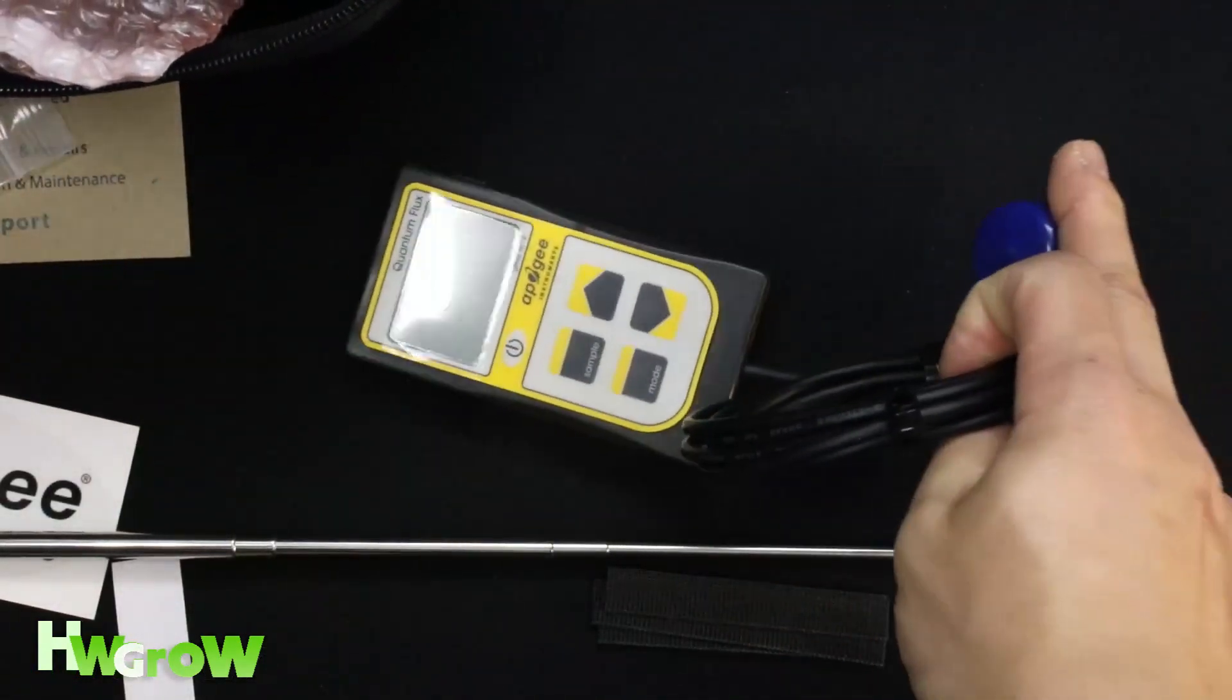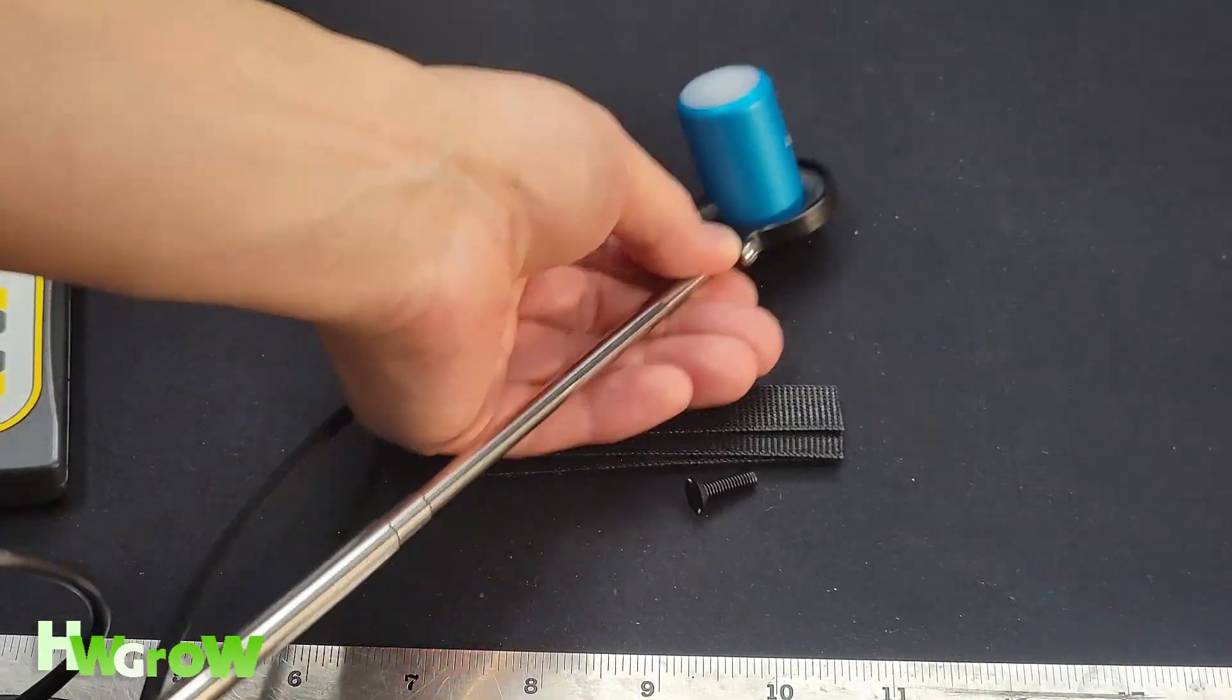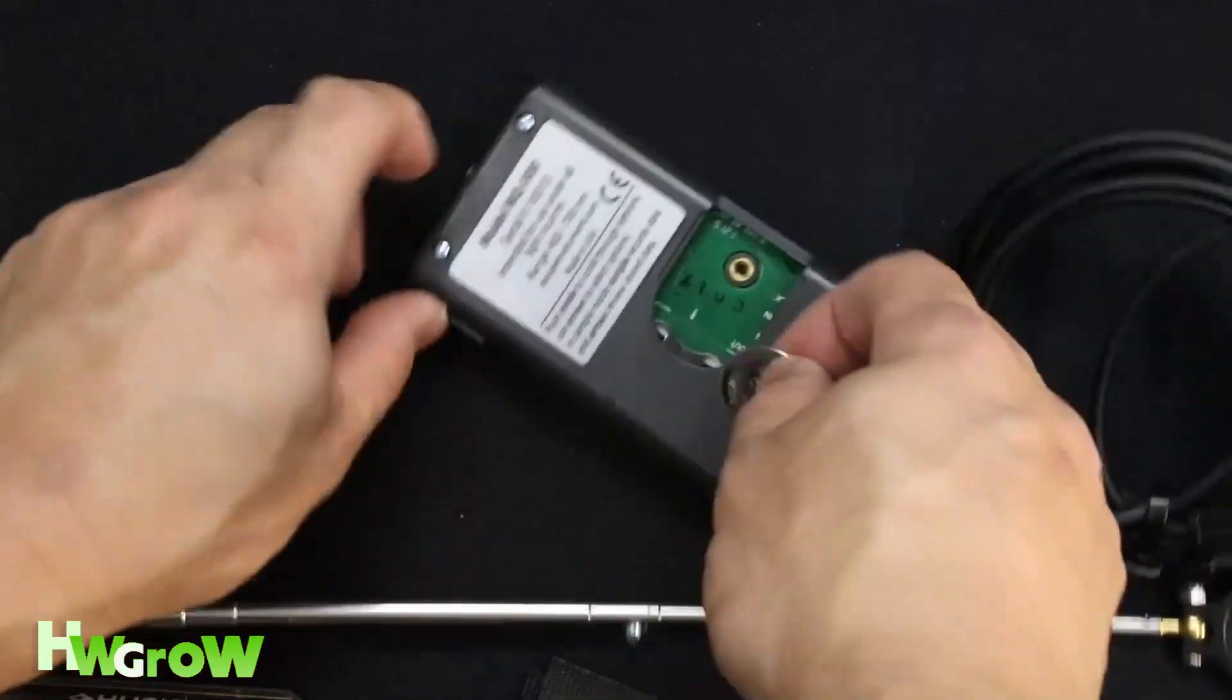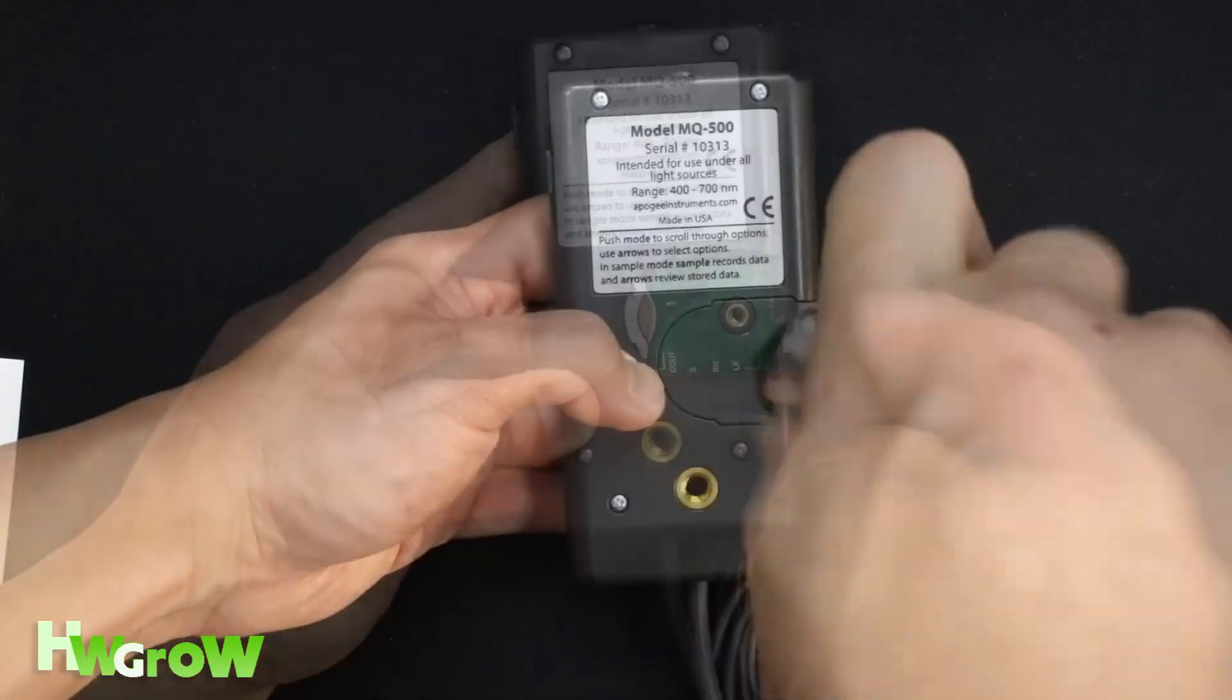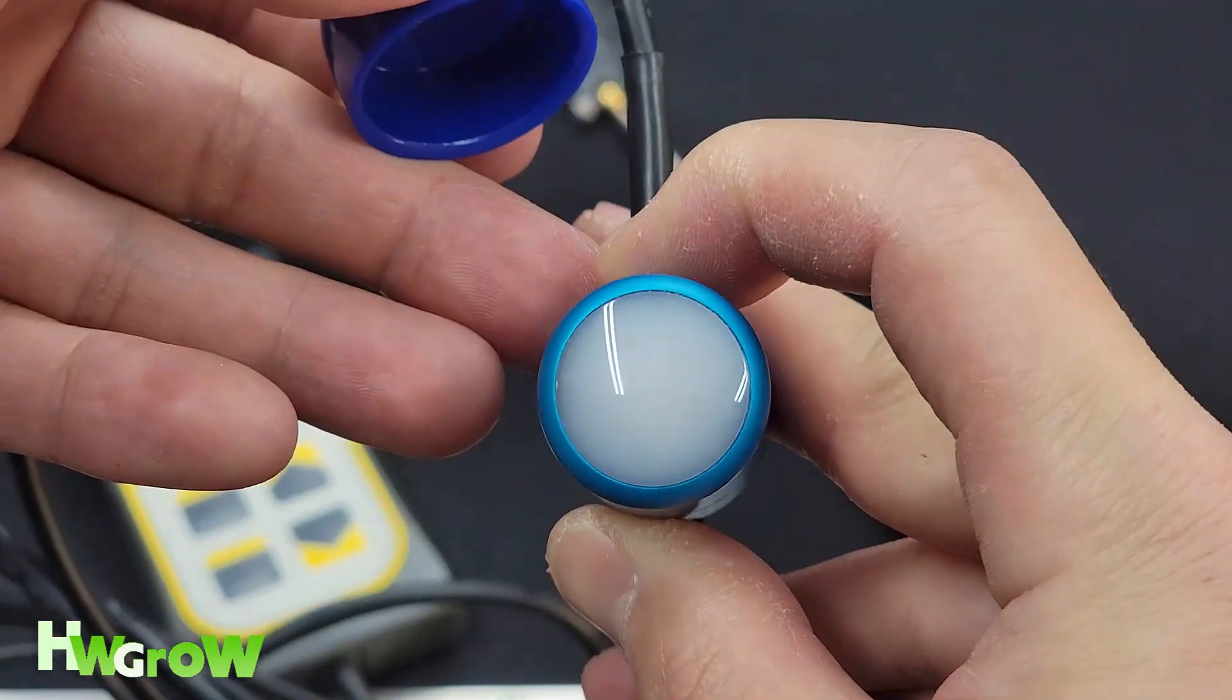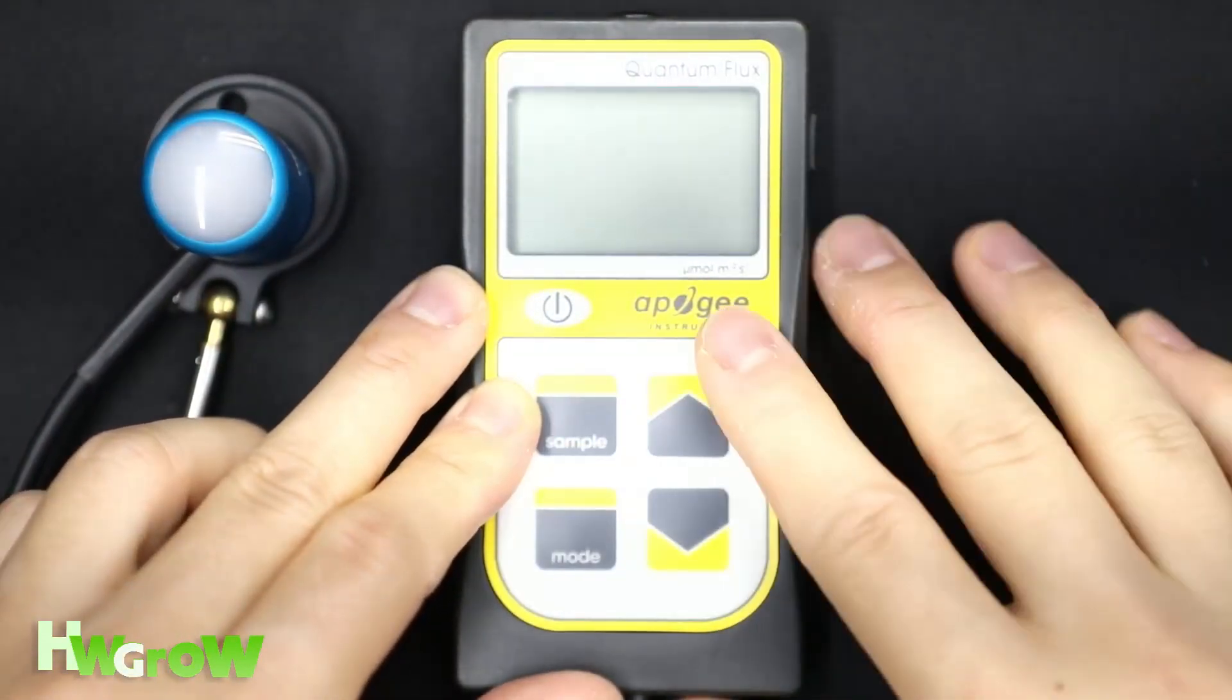This AM310 bundle comes with everything you see here, and the only additional thing you get in this set is this telescopic wand that lets you place the sensor easier. There's an included cell battery that you can install with the Phillips screwdriver, and once you put the battery in, the device is good to go. The sensor has this blue cap which reveals a white dome that absorbs and reads light. This device is extremely simple and easy to use. Here's the meter, and this is how you use it.